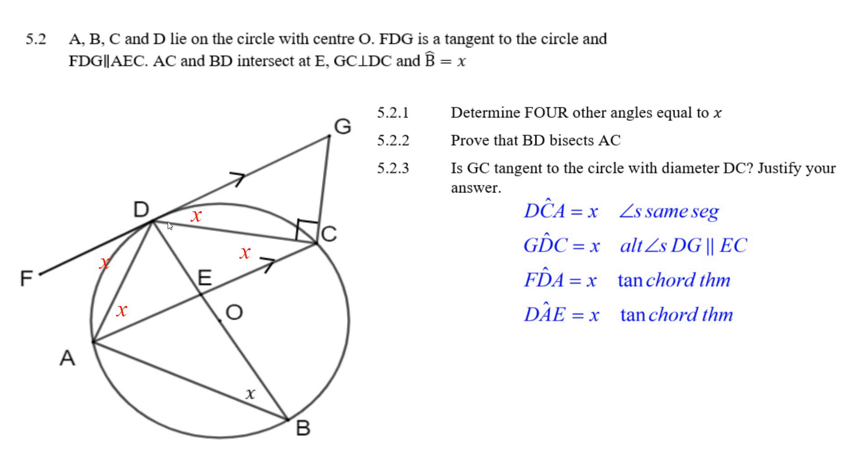Now it says prove that B, D bisects A, C. Well, hey, that's a line from the center. If we could prove that this angle here was 90 degrees, we'd have it. So that's what we have to do. Let's just take a look at that.